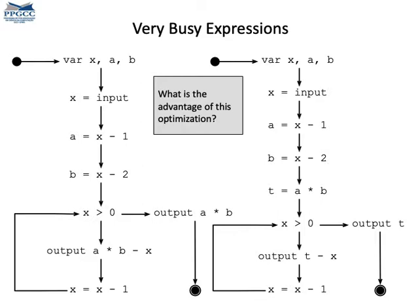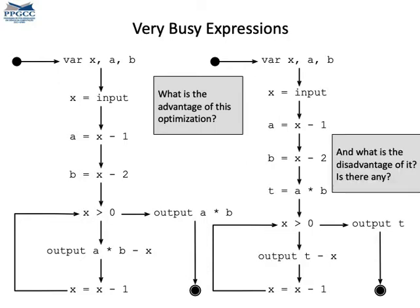You can see the modified program on the right, the optimized program. As you see, we are placing the computation of A times B in a temporary location called T. Then we use T after that point where A times B is computed. But let me ask you something. Is there any disadvantage on this kind of optimization?